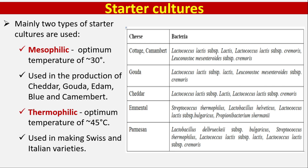Starter cultures used: there are two different types — mesophilic and thermophilic. Mesophilic cultures have an optimum temperature of 30°C and are used in the production of Cheddar, Gouda, Edam, Blue, and Camembert. Thermophilic cultures have an optimum temperature of 45°C and are used in making Swiss and Italian varieties.